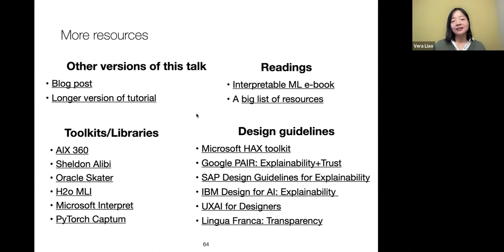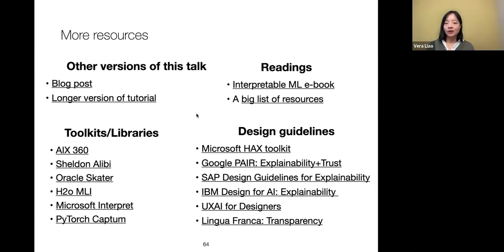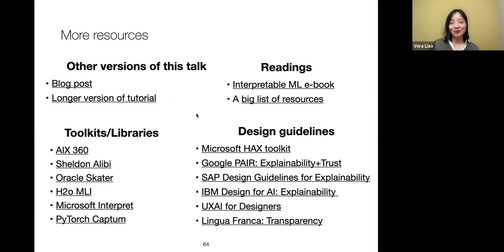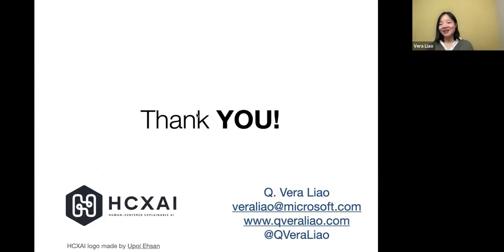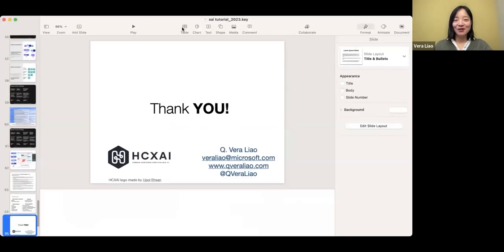Sometimes explanation alone is not enough. Users might need domain knowledge first — understanding what a feature actually means or how AI generally works. In some cases, linking explanation to other evidence or clinical guidelines is necessary, not just opening the black-box algorithm and seeing what's inside. In the worst cases, you may not want to expose the underlying algorithm data directly and may need creative solutions, like mapping explanations to higher-level descriptions. I have links to readings about explainable AI, toolkits, libraries, and design guidelines from Microsoft, Google, and other companies. And with that, that's the end of my talk.